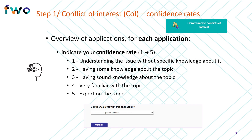We also ask you to inform us of your suitability to act as a reviewer for each application submitted to your panel, by indicating your confidence level using a scale of 1 to 5. 1 stands for understanding the issue without having specific knowledge about it. We expect that you will not need to use this lowest score frequently, or even at all, since as a generalist in your field with broad expertise, you are presumably knowledgeable about most if not all of the applications submitted to your panel. Still, distinguishing between your level of confidence for evaluating the applications using the 2 to 5 rating scale is important, as the chairs will try to allocate each application to the most suitable panel members, using the range of expertise present in the panel.